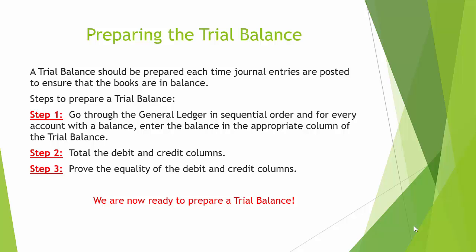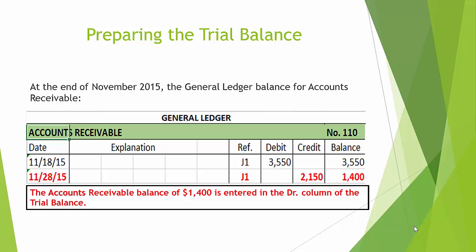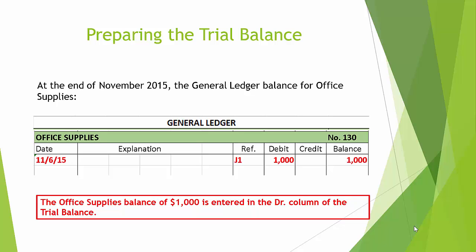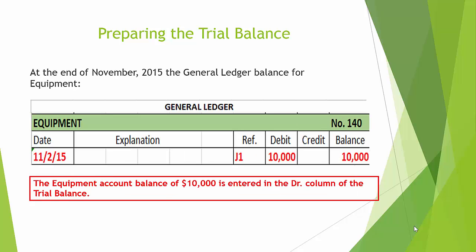We are now ready to prepare a trial balance. At the end of November 2015, the general ledger balance for cash is $13,200 debit — this amount should be entered in the debit column. The balance for accounts receivable is $1,400 debit, office supplies is $1,000 debit, and prepaid insurance is $900 debit. Each of these amounts should be entered in the debit column of the trial balance.